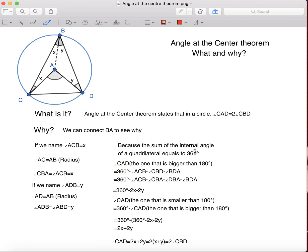So, what is the angle at the center theorem? This theorem basically states that if an arc subsides an angle at the center of a circle and at the circumference, then the angle at the center is twice the size of the angle at the circumference.